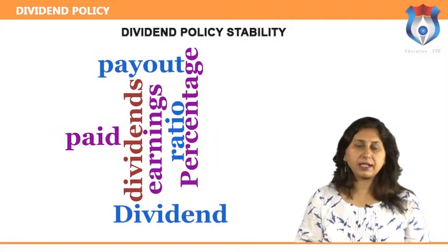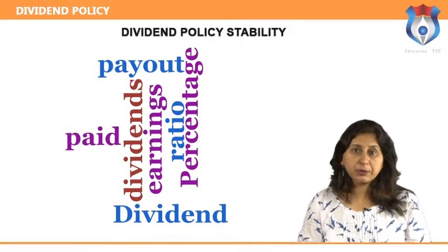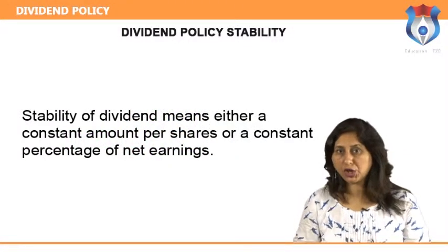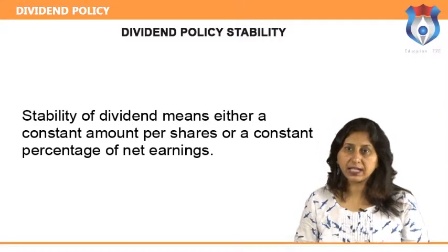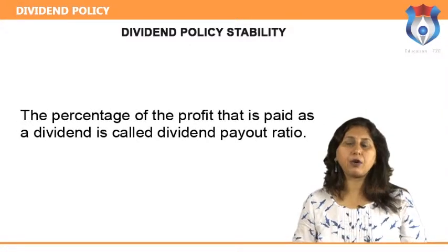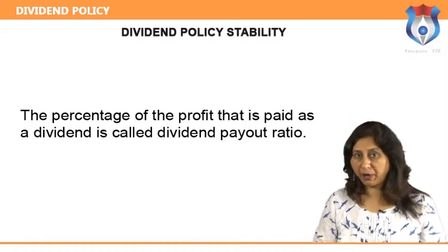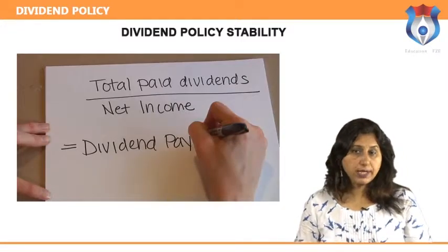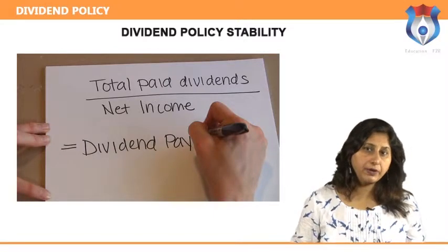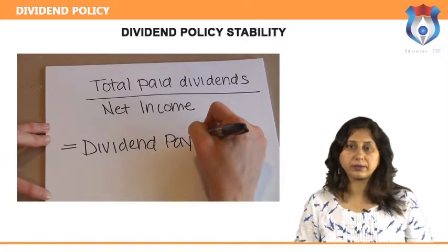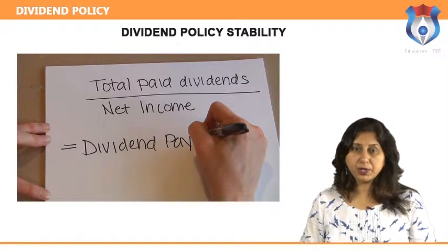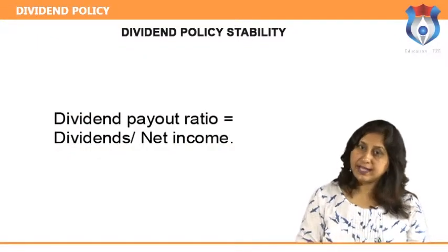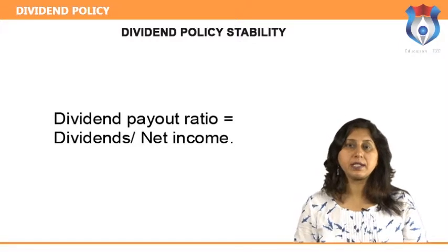Dividend policy stability. Stable dividends have a positive impact on the market price of shares. Stability of dividend means either a constant amount per share or a constant percentage of net earnings. Stable dividend payout ratio: the percentage of profit paid as a dividend is called the dividend payout ratio. It shows how mature the company is — the higher the dividend payout ratio, the more mature the organization. Dividend payout ratio = yearly dividend per share / earnings per share, or equivalently, dividends / net income.